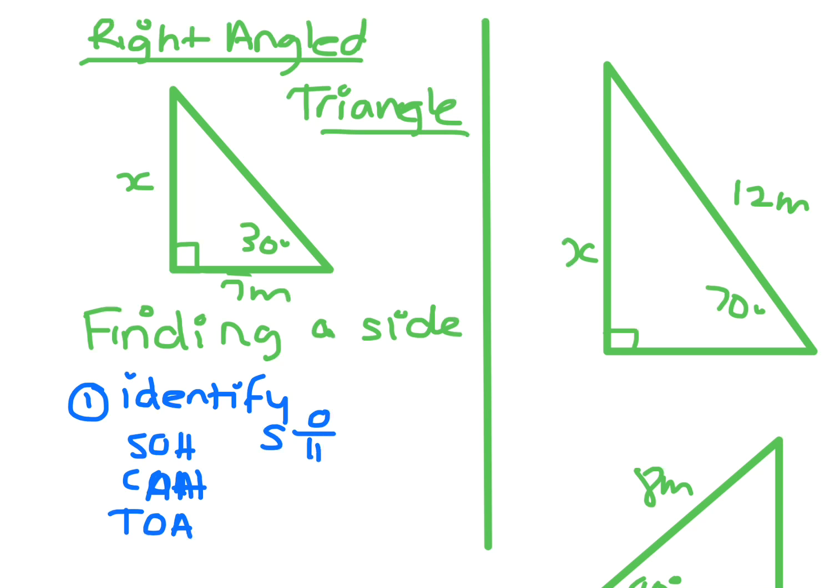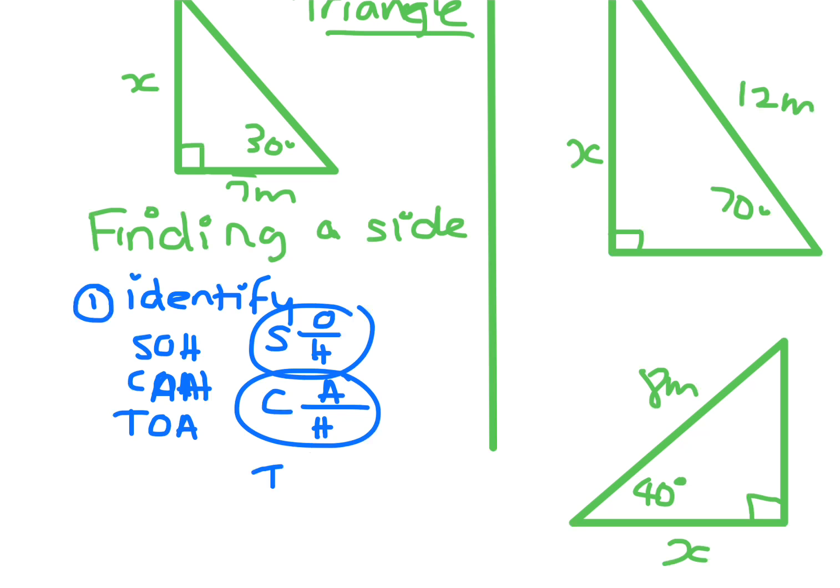So sine is opposite on hypotenuse, and that order is really important. Opposite is on top, hypotenuse is on the bottom. Cos is adjacent on hypotenuse, and tan is opposite on adjacent.